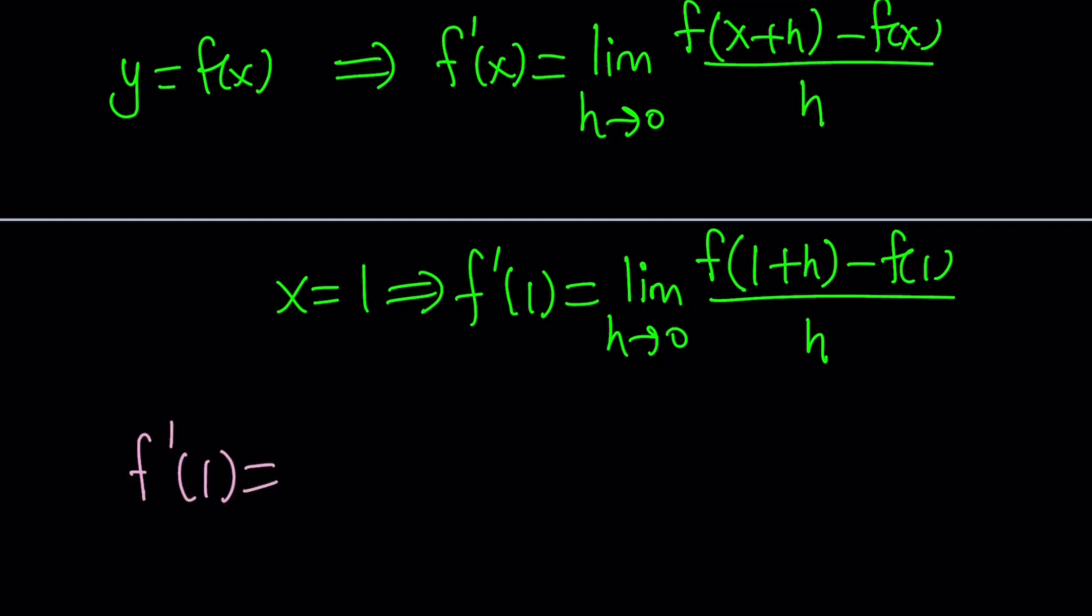If you have the limit of a difference, it can be written as the difference of two limits. That's one of the limit properties. So this is equivalent to limit as h approaches 0 of f of 1 plus h divided by h minus limit as h approaches 0 of f of 1 over h.